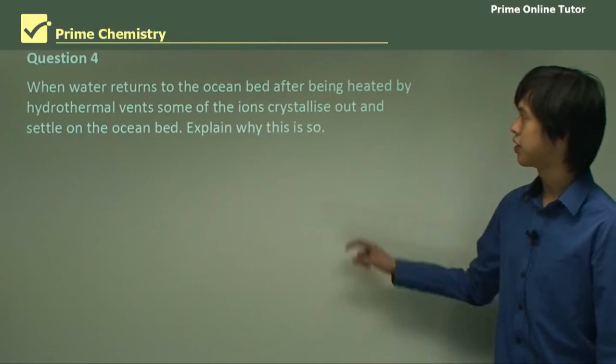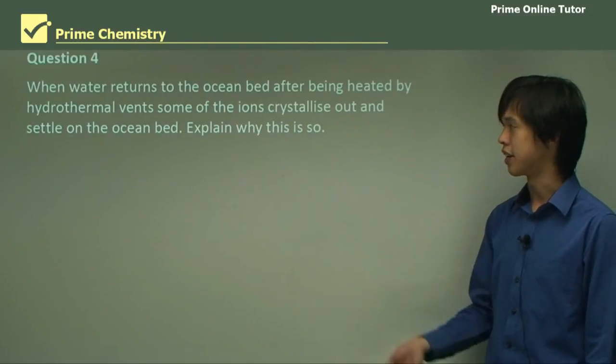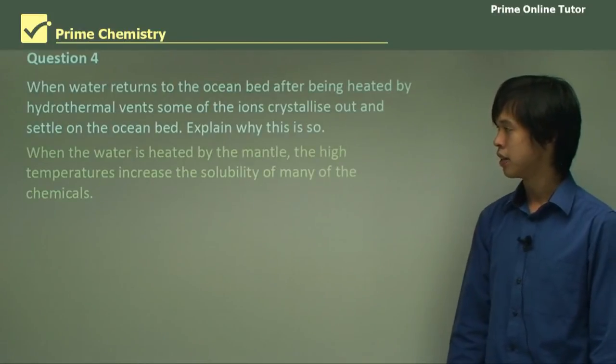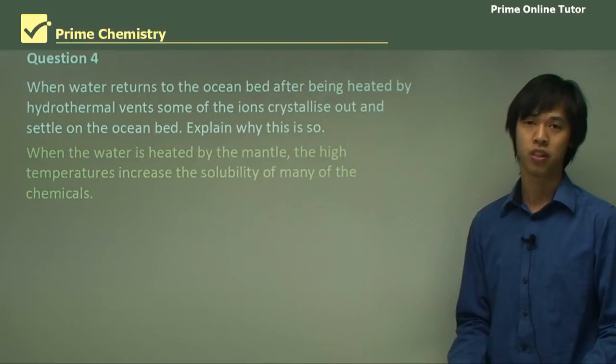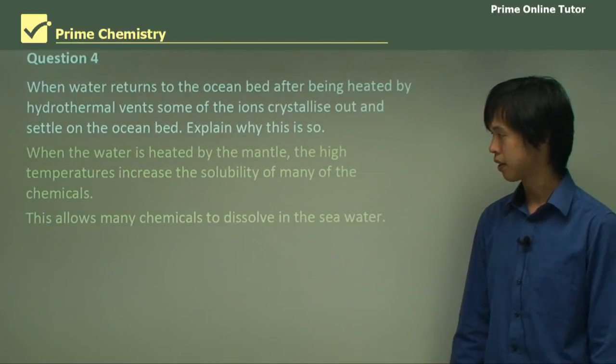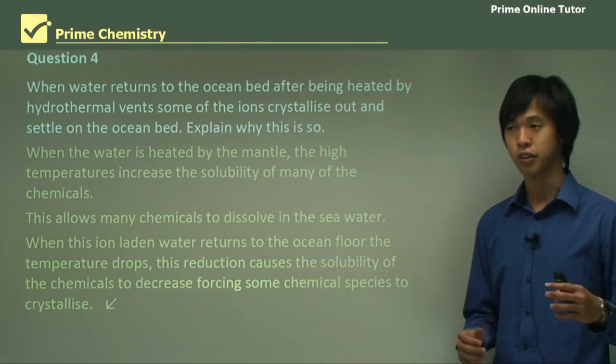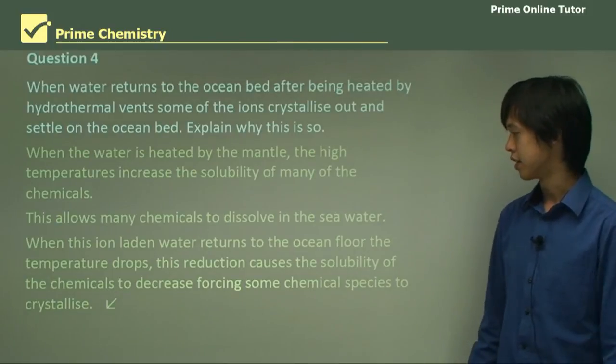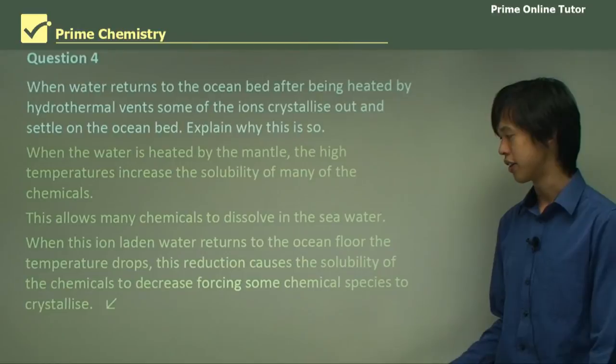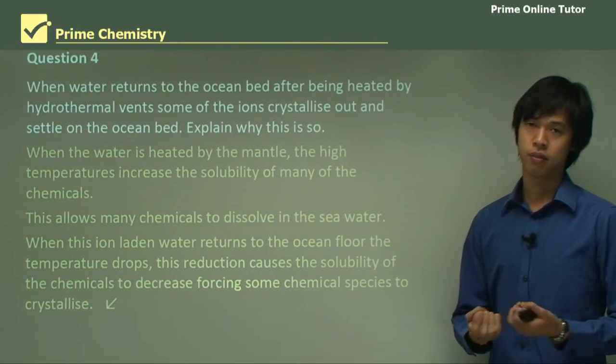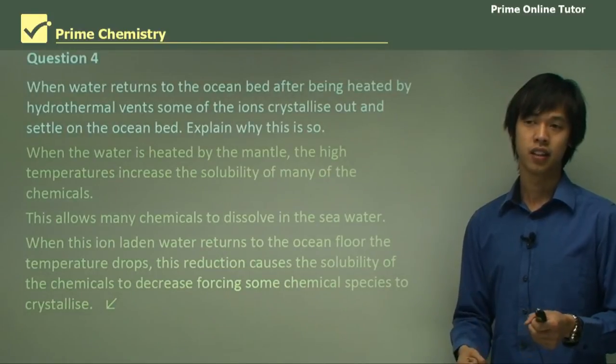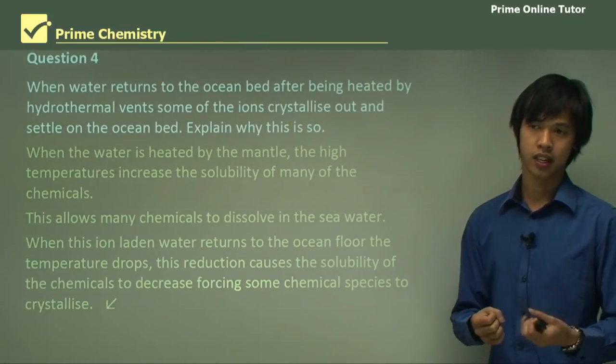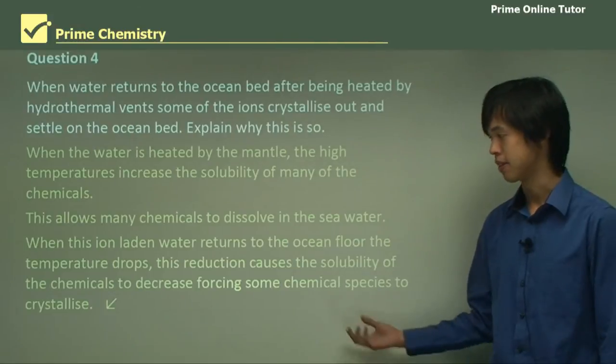Question four: when water runs to the ocean bed after being heated by hydrothermal vents, some of the ions crystallize out and settle on the ocean bed. Explain why this is so. When the water is heated by the mantle, the high temperatures increase the solubility of many of the chemicals. Remember, high temperatures, you can dissolve more things. Low temperatures, obviously, you can't. This allows many chemicals in the rocks, in the minerals, to dissolve in the seawater. When this ion-laden water returns to the ocean floor, after it leaves the heating process, the temperature drops, and this reduction causes the solubility of the chemicals to decrease, forcing some chemical species to crystallize. It would be like if you saturated a solution with sugar when it was hot, and then you cooled it, you'd notice that things would start crystallizing out because suddenly it's become less soluble, and so it becomes a solid again. Basically the same process.